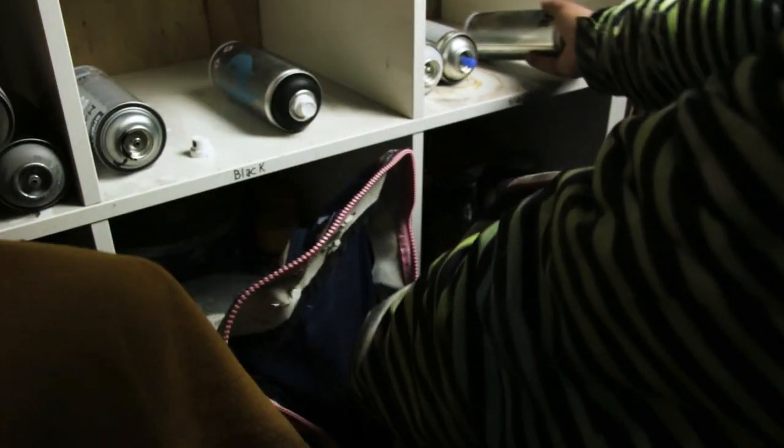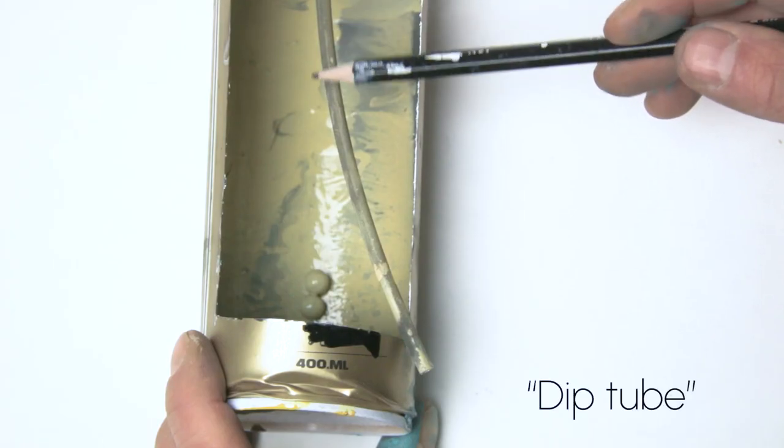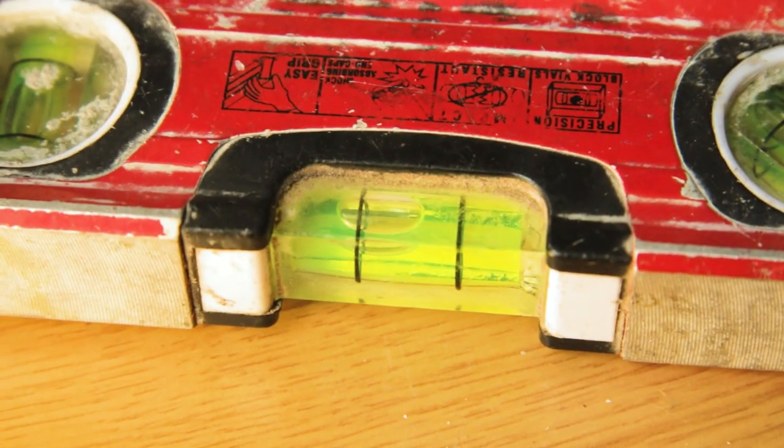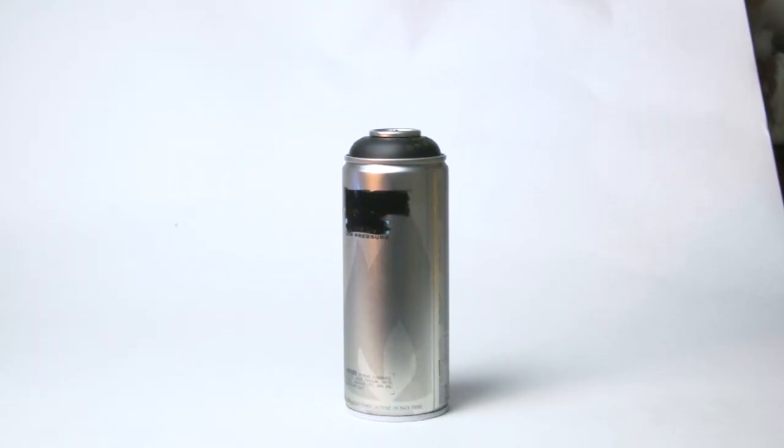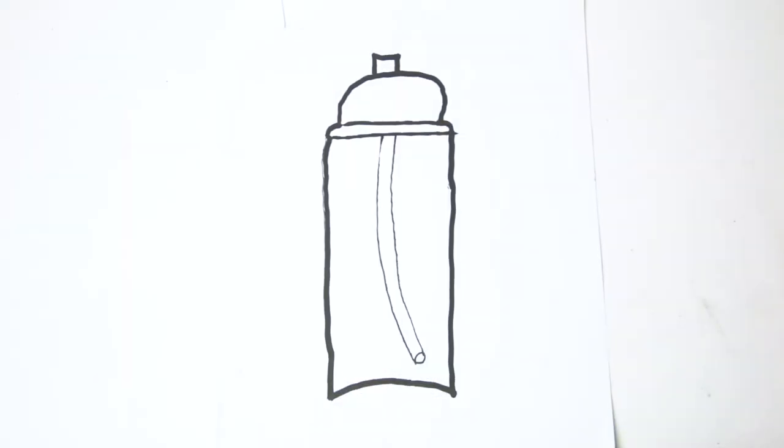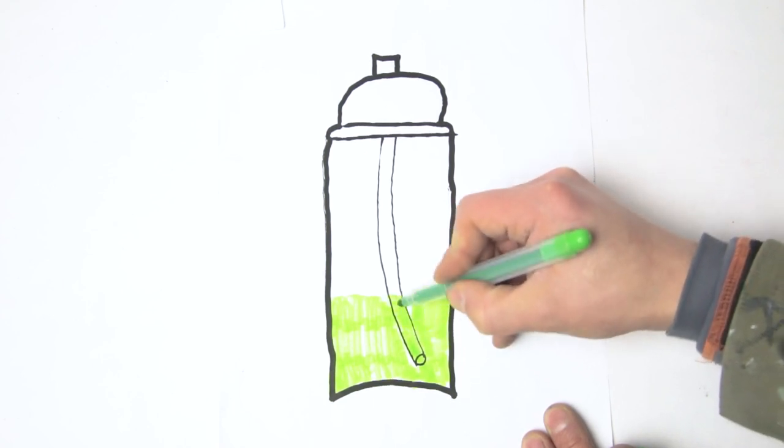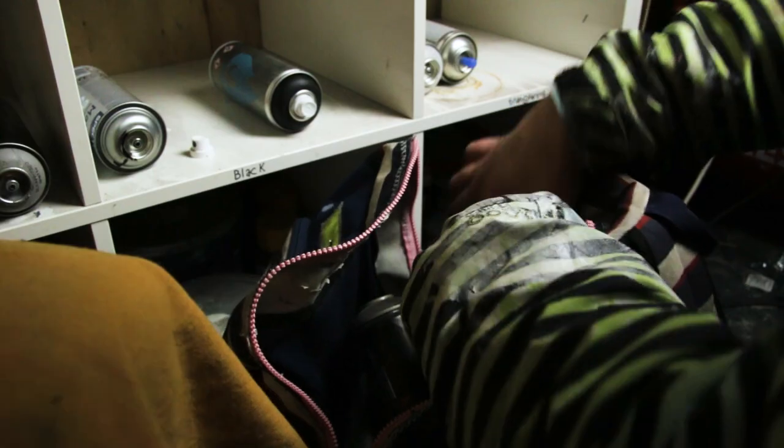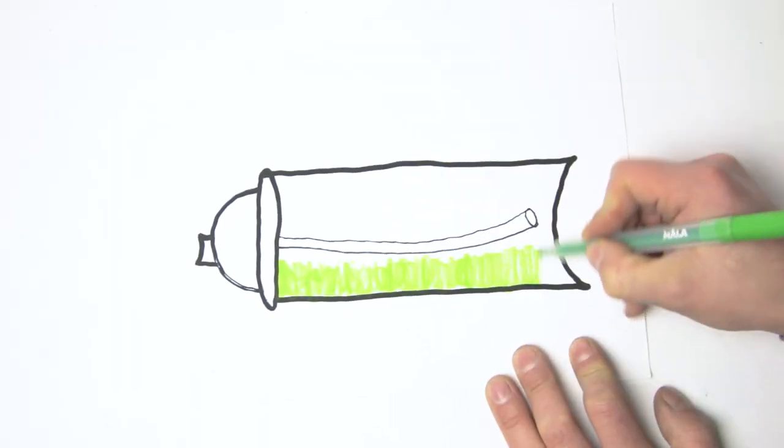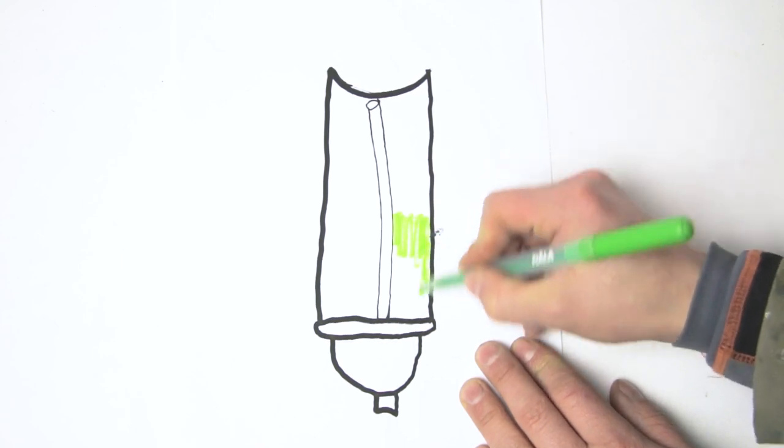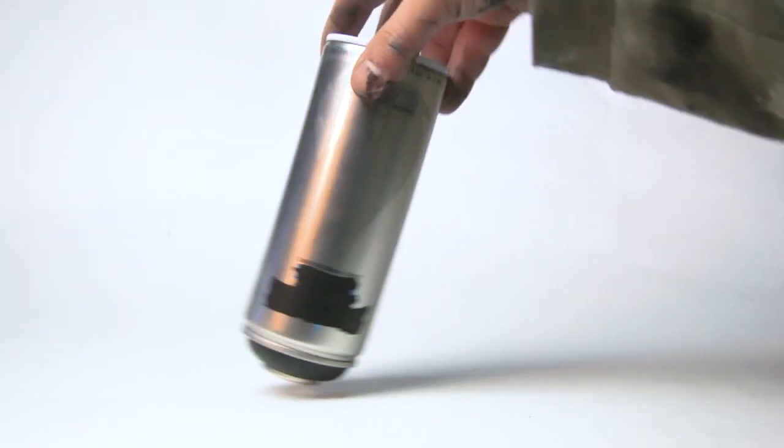When storing your cans, keep in mind that there's a straw or so-called dip tube inside of the can, and water seeks its own level. The same goes for pigment in a can. Imagine this. You keep them upright, all the pigment sinks to the bottom and crawls into the straw. Then the next time you shake it, the pigment won't mix in the tube, therefore clogging your can. So, whenever you store them for a longer period, keep them sideways. Even better would be upside down, but then I won't be able to read the label, so sideways it is.